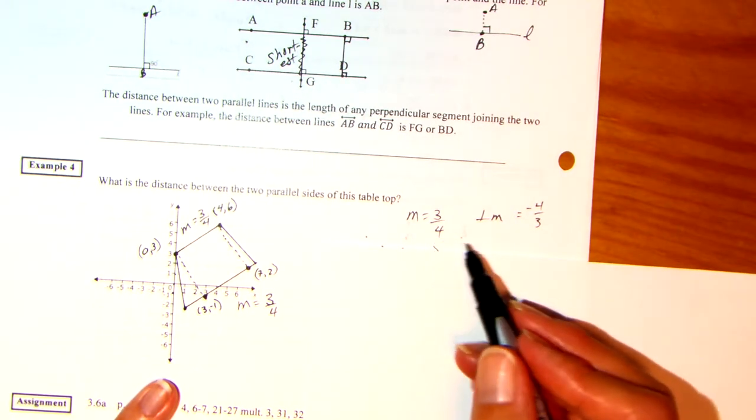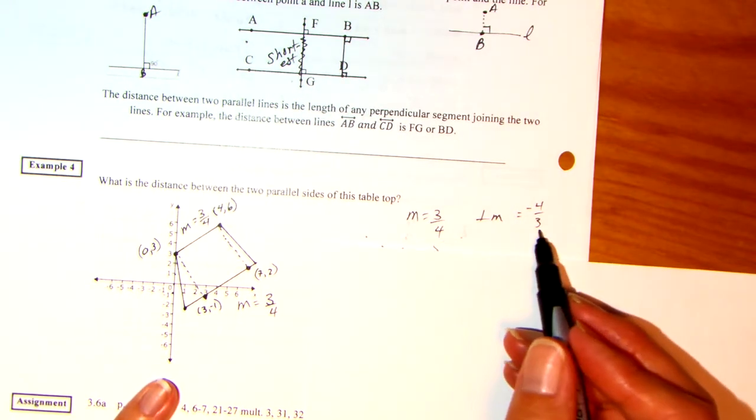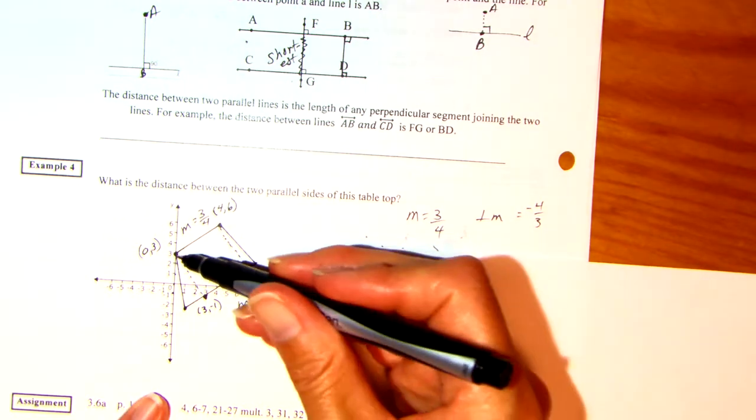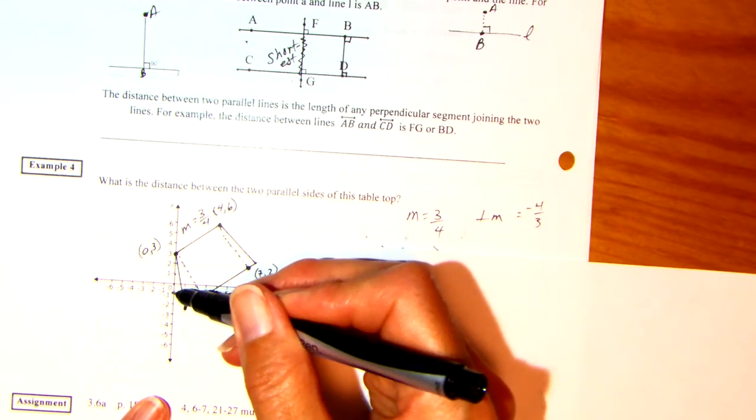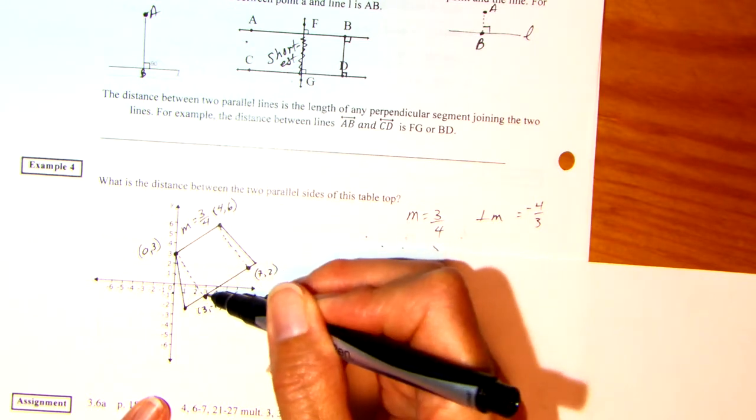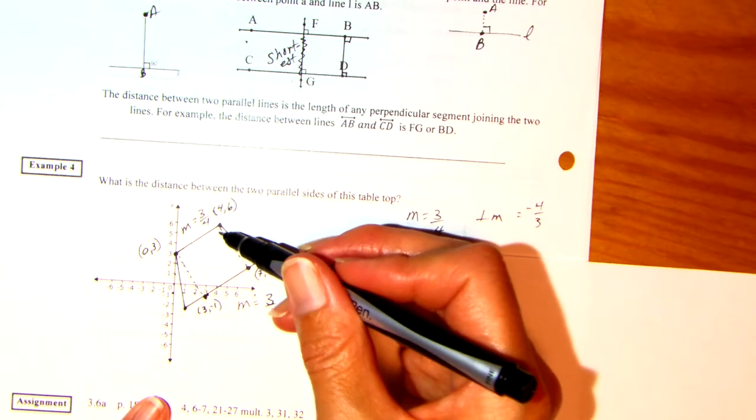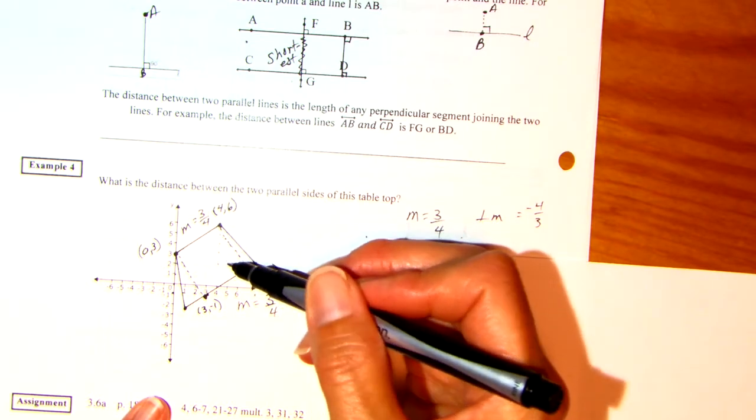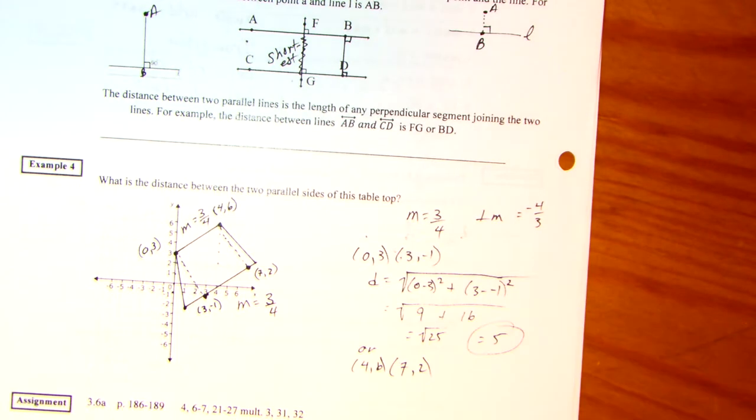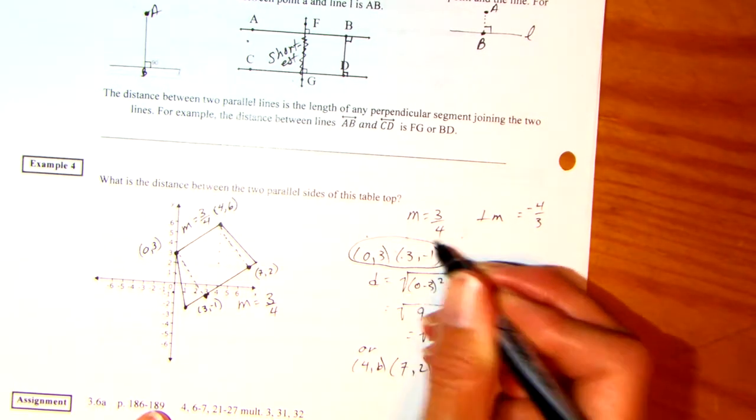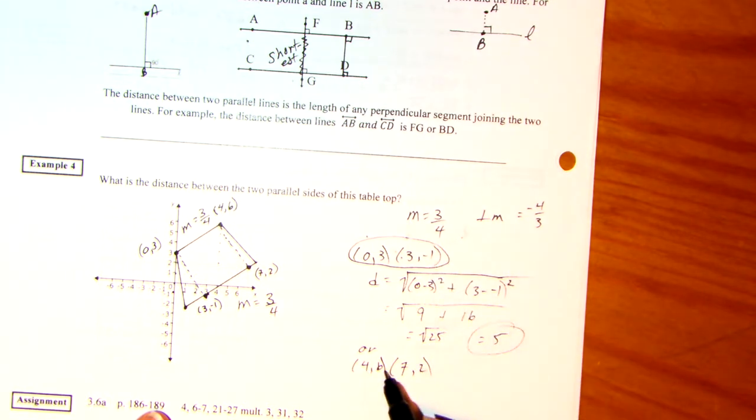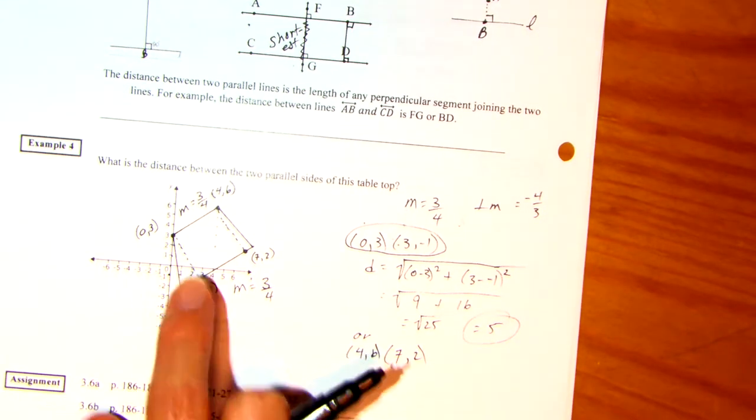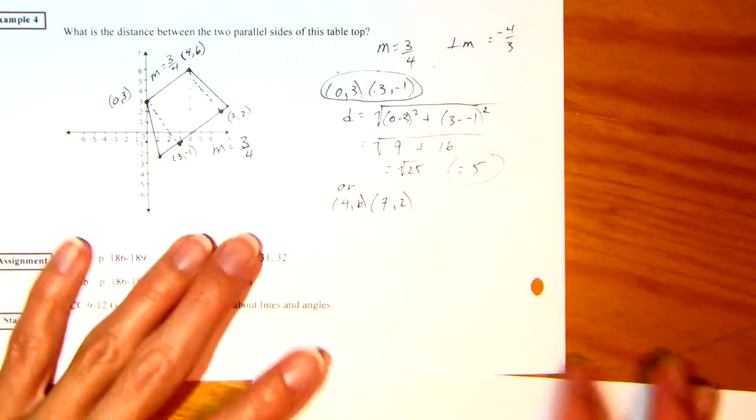So if your slope is three-fourths, perpendicular slope will be negative four-thirds. So let's double check to go from this point to this one if we can go down four over three. So down one, two, three, four, over one, two, three. Hits that point. And let's double check here and here. Down one, two, three, four, over one, two, three. So your choice is we can find the distance between (0,3) and (3,-1) or find the distance between (4,6) and (7,2). I already did the work for these two. I found that distance. I'm going to go ahead and find the distance for this one.